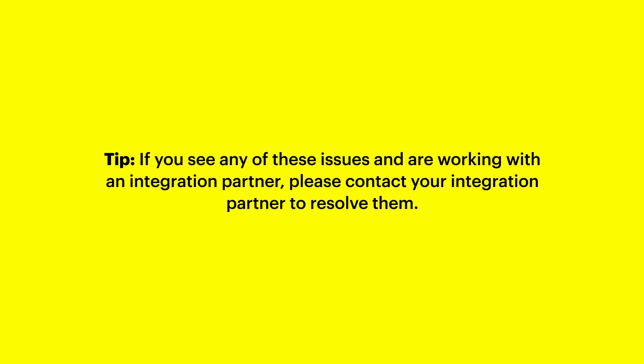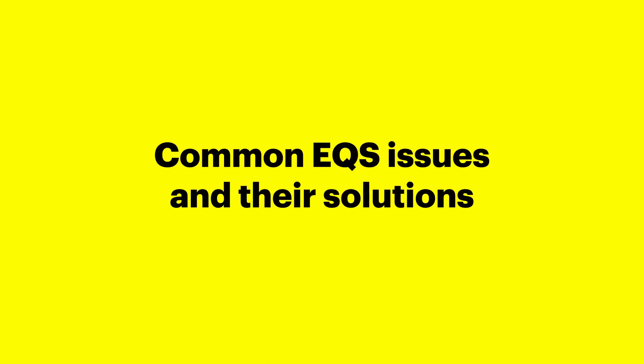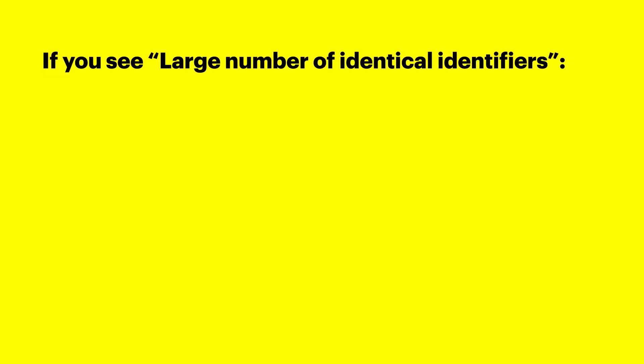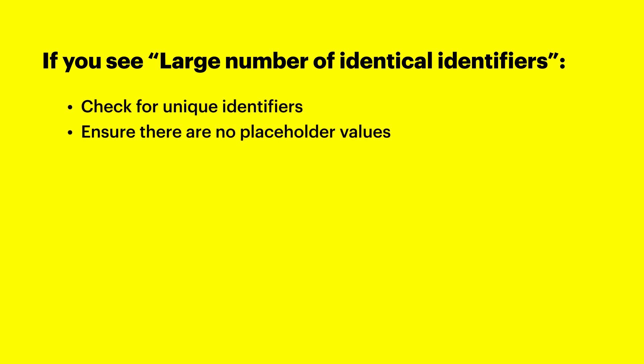If you see any issues and are working with an integration partner, please contact your integration partner and work together to resolve them. Next we'll cover some of the common issues you may see and how to resolve them. If you see a large number of identical identifiers being passed for an identifier, you may have an issue where you're passing duplicate identifiers for that signal. Please check your integration and ensure that you are passing unique identifiers per conversion and are not passing any placeholder values such as null, test at test.com, or zero.